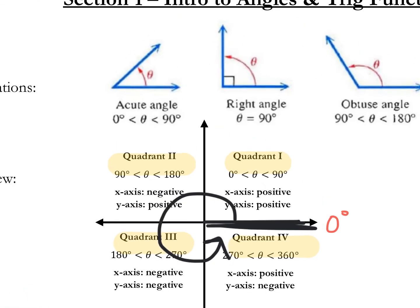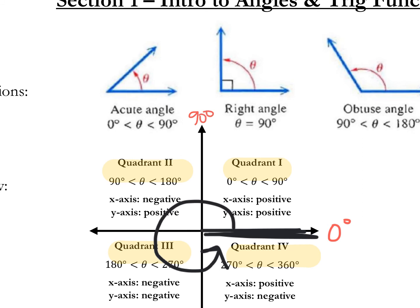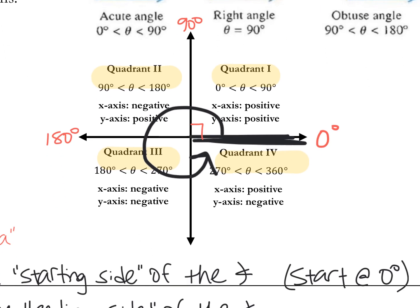Obviously if you rotate up here, this is 90 degrees — we have a right angle there. If you keep going in this direction, we have our straight angle, so going from zero to here is 180 degrees. Add 90 degrees again and this is 270. And then we end up all the way back at 360 degrees. We usually refer to this as zero degrees, not 360, but it is the starting and ending place of the full circle.